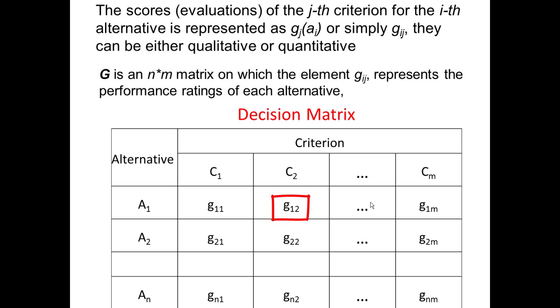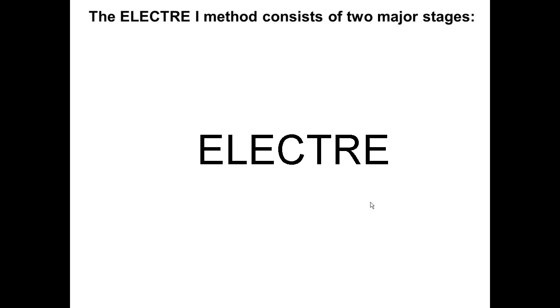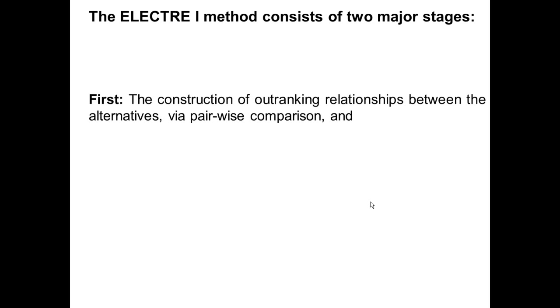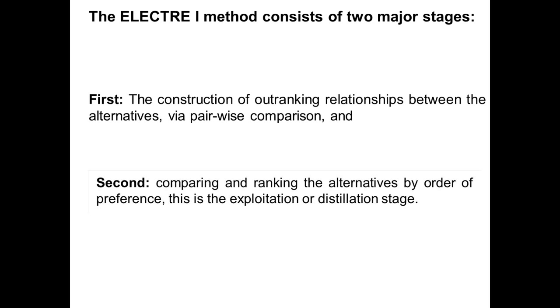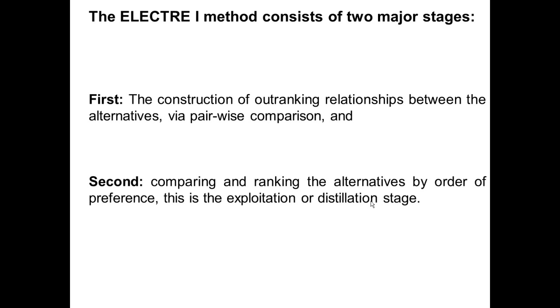The ELECTRE method which we present here, the ELECTRE number one, consists of two major stages. First, the construction of the outranking relationships between alternatives by pairwise comparison. And second, comparing and ranking the alternatives by their preference. This is the exploitation or distillation step. The ELECTRE method is based on computation of two matrices, named matrix of concordance and matrix of discordance.